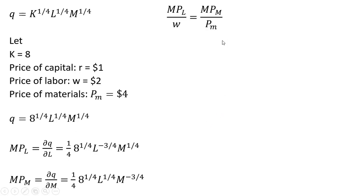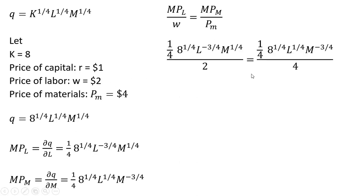When the firm is minimizing its cost of production for a given level of output, this condition must hold: the marginal product per dollar of labor will equal the marginal product per dollar spent on materials. So what I'm going to do now is make a substitution for the marginal product of labor, marginal product of materials, and I'll also plug in the wage and price of raw materials. We'll note that the one-fourth and one-fourth will cancel on each side, as well as the eight raised to the one-fourth power will cancel on each side.